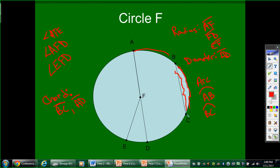So again, I could also have arc CD. I could have arc BD. I could have arc AD. I could have arc ED. Many different arcs throughout this circle.